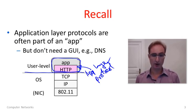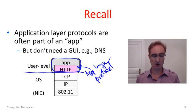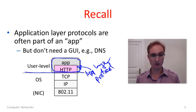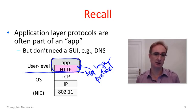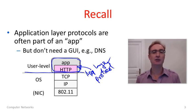One thing I want to call your attention to is that application layer protocols don't necessarily need a GUI. This is why something like the DNS, the domain name system — which translates host names to IP addresses — is an application layer protocol from our point of view, even though it doesn't really have a user interface and you might not otherwise be aware of it. You might think of it more as a network service.